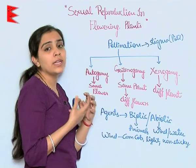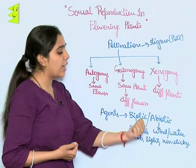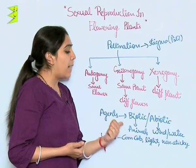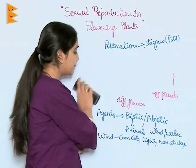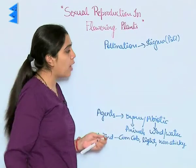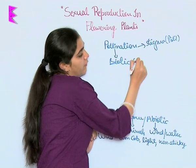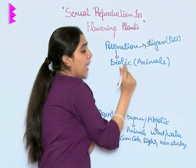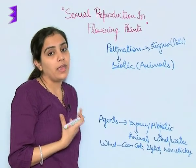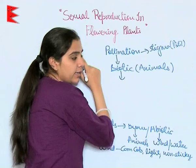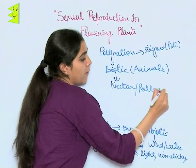Now, how does this pollination occur? Various agents lead to pollination, and these agents are biotic and abiotic. Biotic agents are animals. Animals usually come close to plants in search of certain rewards or favors from the pollinators. What they get in return is nectar and pollens.